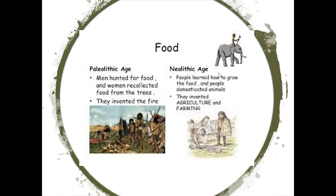Within the Stone Age, there are two important eras. On the left, the Paleolithic Age: men hunted for food and women collected food from trees — berries and seeds — the hunter-gatherers. This is also the era where fire was discovered. Nobody invented it — it was always around; they discovered how to harness and manage it. The Neolithic Age is hugely important to who we are today: people learned how to grow food, domesticated animals to do their work, and invented agriculture and farming. People stayed still — sedentary — and didn't move around so much.